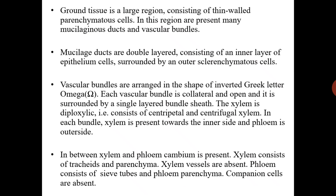Xylem consists of tracheids and parenchyma — xylem vessels are absent. Phloem consists of sieve tubes and phloem parenchyma — companion cells are absent in phloem. These features are the same as in the stem.